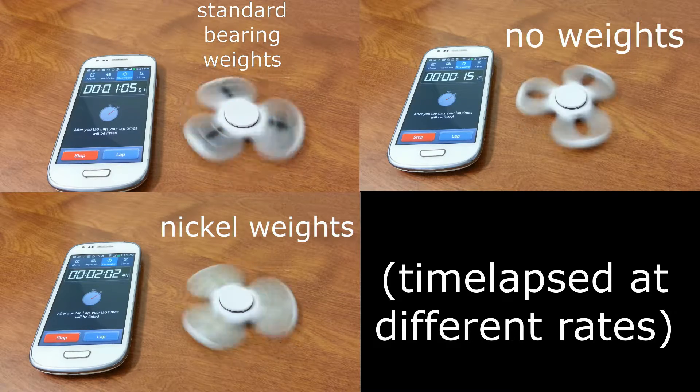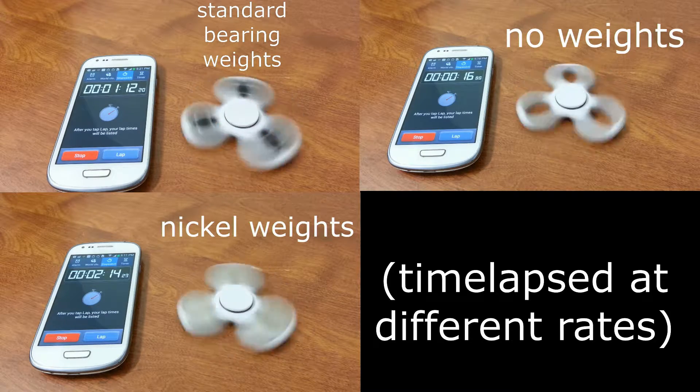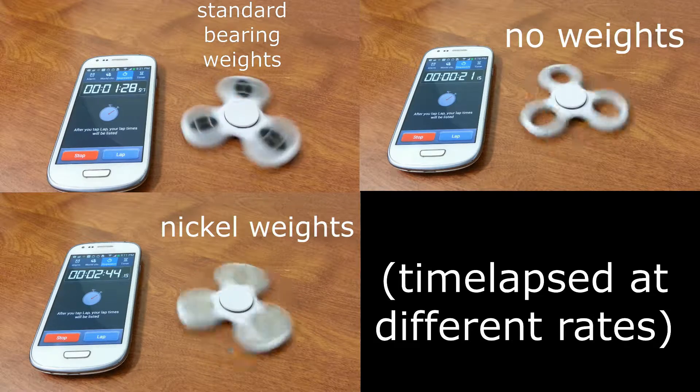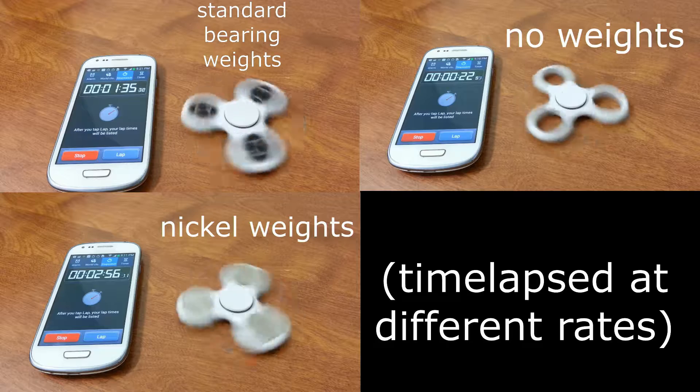More weight means more inertia, which means you can pack more energy into it. They make bullets out of lead for the same reason. More density equals more energy stored for a given volume.